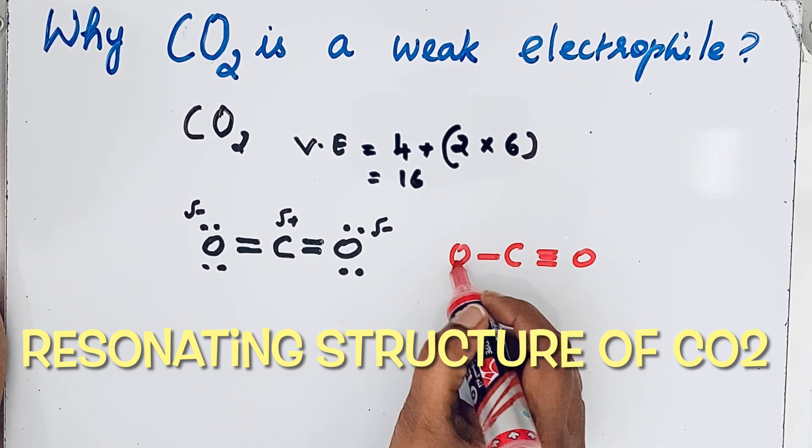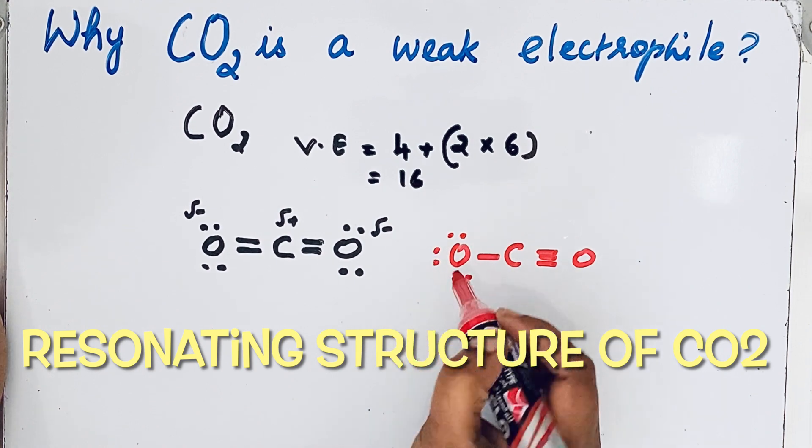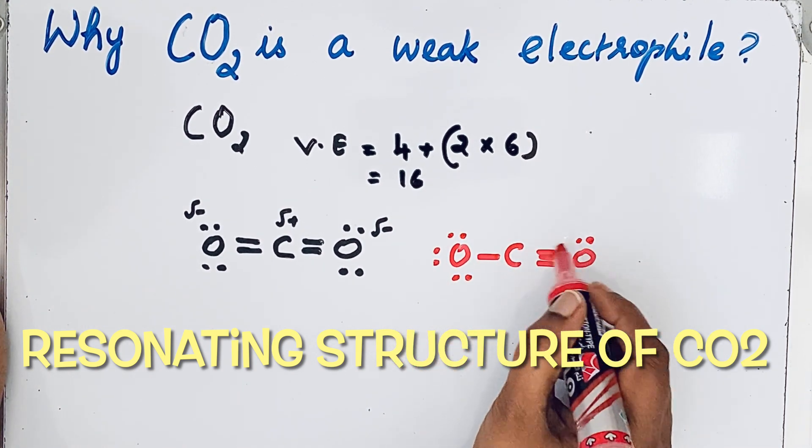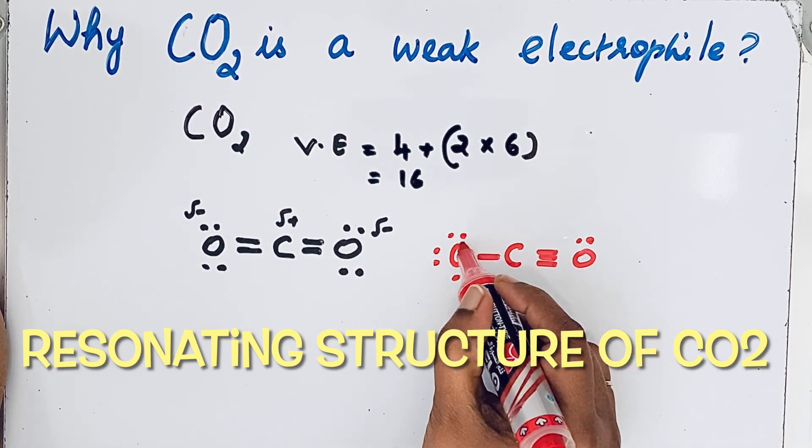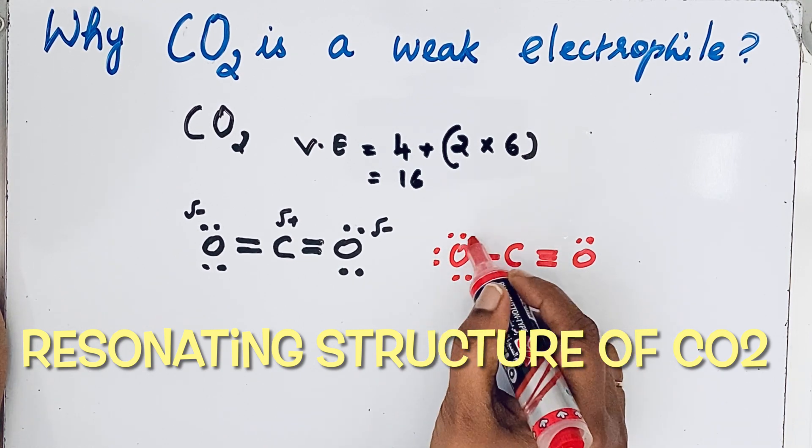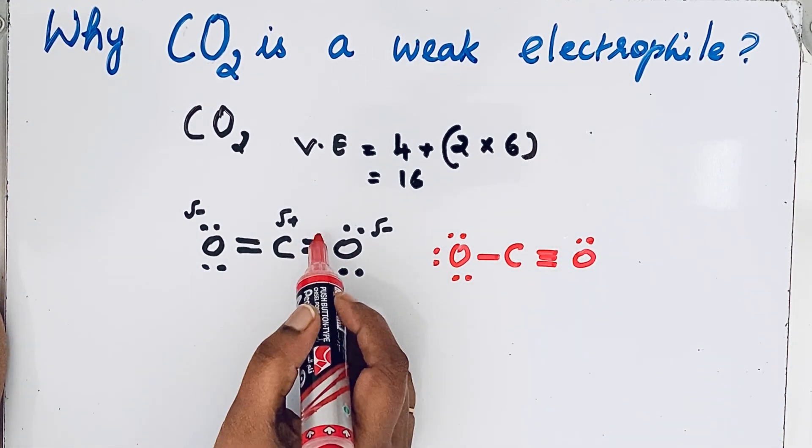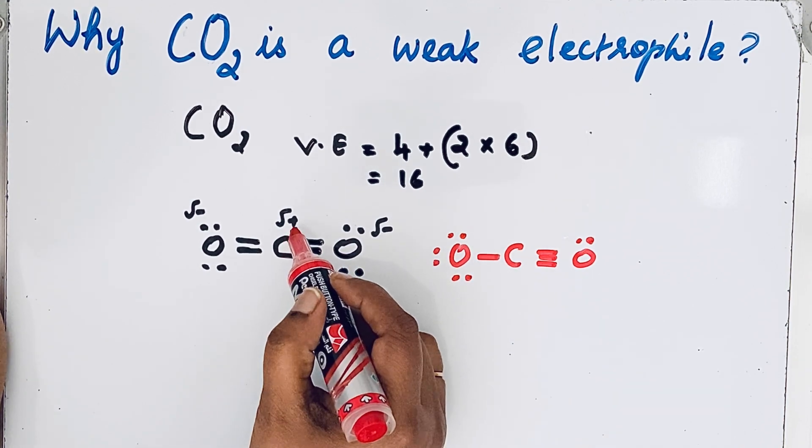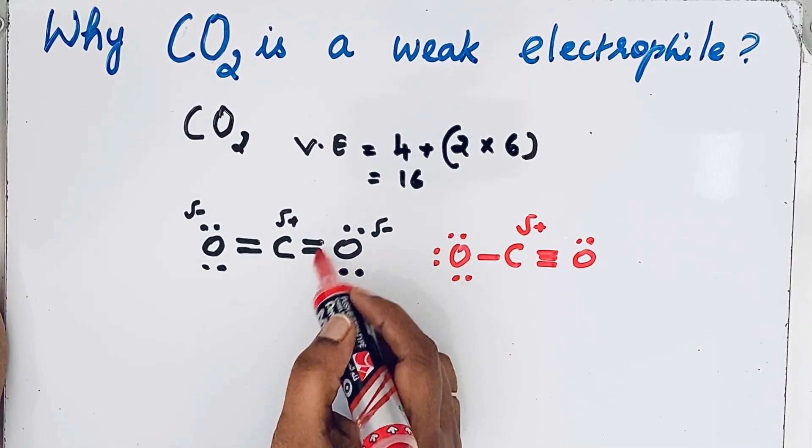For the octet configuration, for the oxygen here, only a single bond: two, four, six. Here, triple bond, so only two electrons. Carbon also has octet configuration completed. This side creates partial negative charge, and this side is the electron-rich part compared to carbon. That is why even though carbon has complete octet configuration, due to this partial positive charge, it can accept electrons and acts as a weak electrophile.